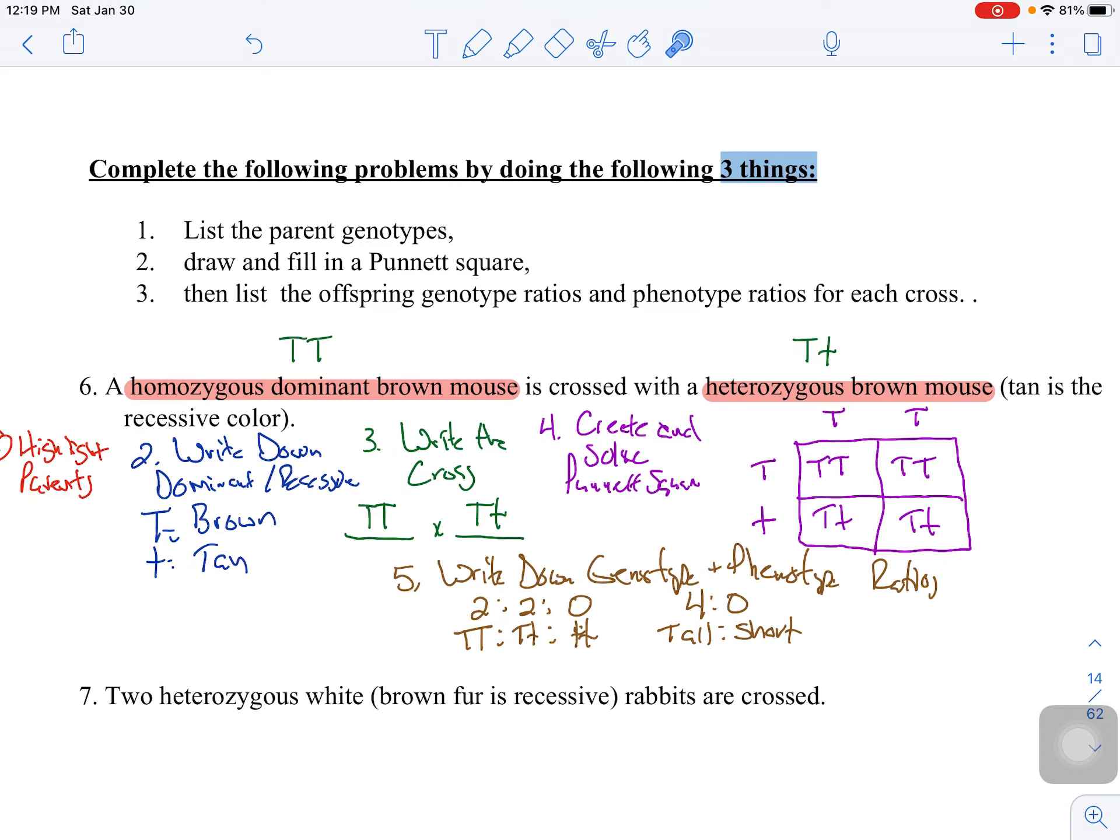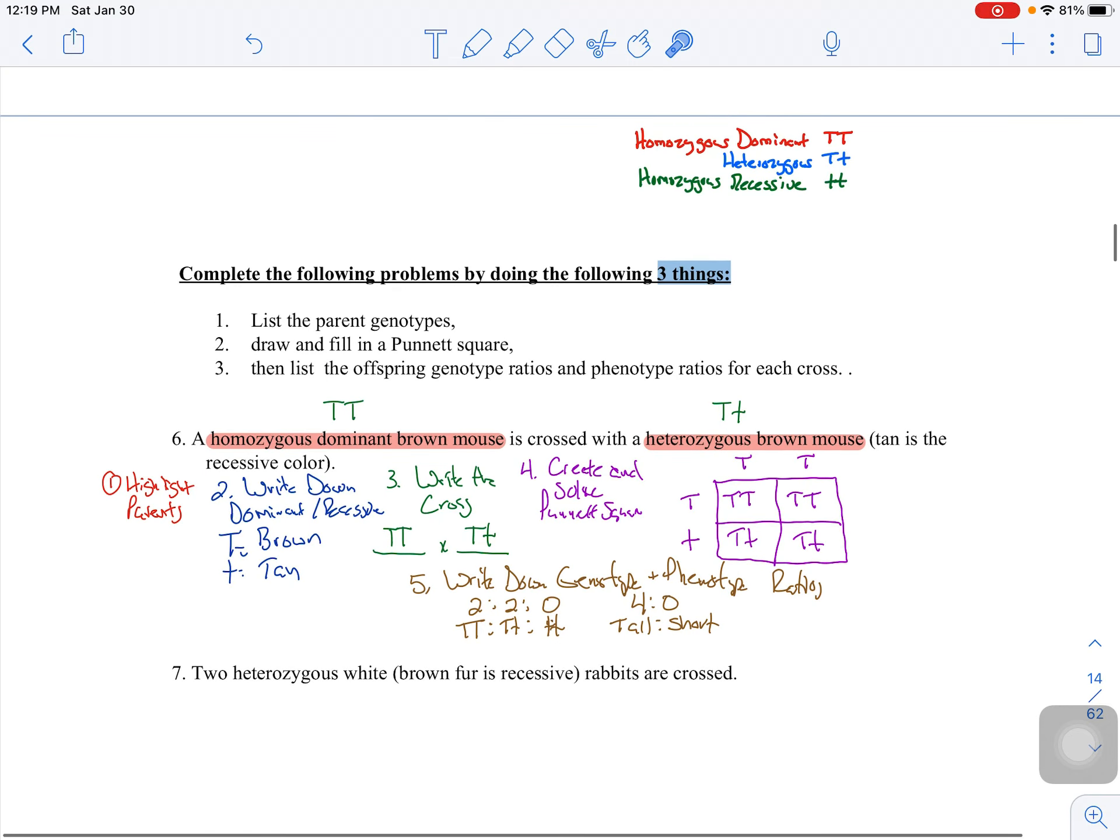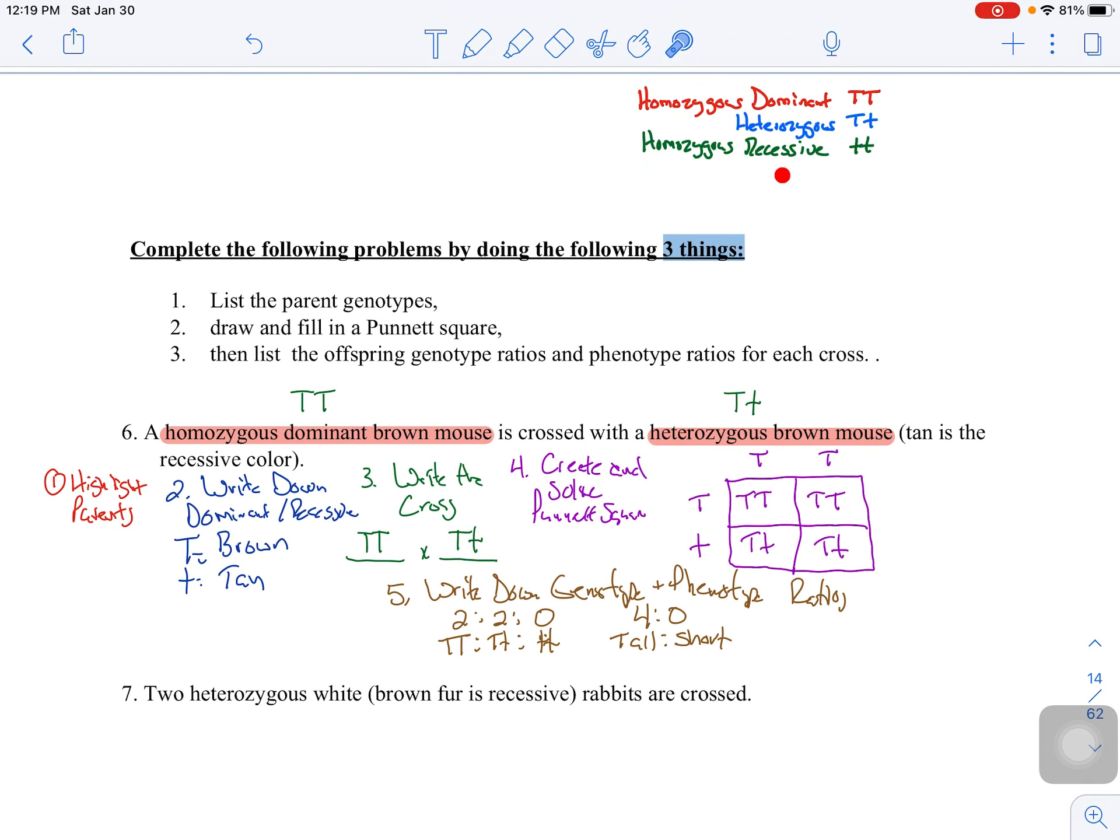Moving forward, there are my five steps. I've got my notes written down at the top, I've highlighted my parents, I've written down the dominant and recessive trait, I've created my cross, I've created and solved my Punnett square, and I have written down the genotype and phenotype ratios and labeled what the ratios actually mean, which I think is the most important part. I would love for you to start getting used to that.